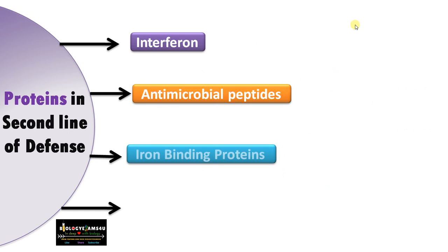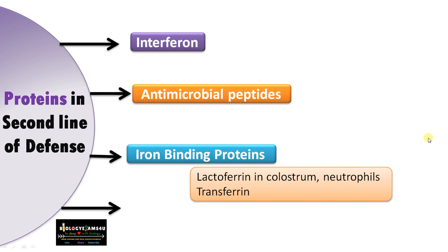The third protein type is iron-binding proteins. A classical example is lactoferrin, present in colostrum and produced by neutrophils. Lactoferrin is an antimicrobial protein with iron-binding properties that removes free iron from the circulatory system. Since iron is an essential requirement for bacterial growth, this inhibits bacterial growth. Another example is transferrin, also an antimicrobial protein with iron-binding capacity.